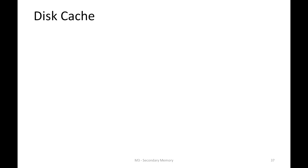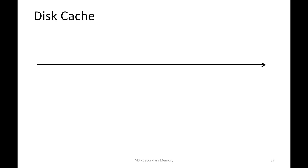Today we are going to look at the last couple of functions. The first one is disk cache. To understand disk cache, let's look at the entire memory hierarchy and look at the access time from the processor perspective, with the x-axis marking the access time.